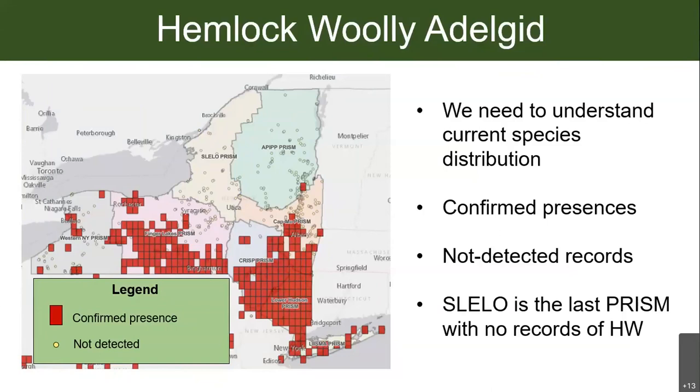SLILO PRISM is the one PRISM that has no records of hemlock woolly adelgid — that's awesome and we want to keep it that way. So we really need to keep surveying for this invasive species to track its spread. The red boxes are where hemlock woolly adelgid has been found, and you'll also see some yellow dots — those are areas where people surveyed and did not find hemlock woolly adelgid.